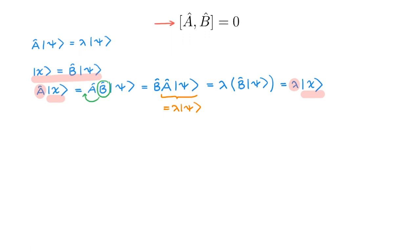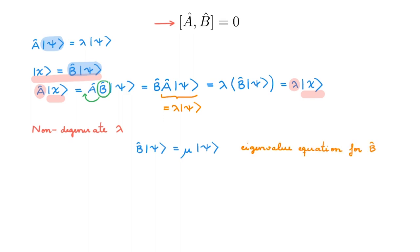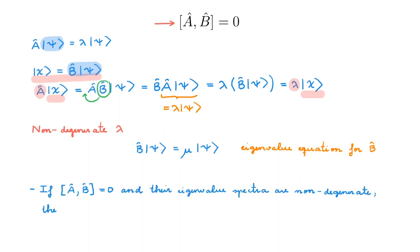So what does this imply? First, let's imagine that lambda is non-degenerate. This means that lambda has a single eigenstate associated with it, although this eigenstate is only defined up to a multiplicative constant. We have just found that both psi and B psi are eigenstates of A with the same eigenvalue. This means that B psi and psi must be the same eigenstate up to a constant, which I call mu. But this equation is just an eigenvalue equation for B, telling us that psi is also an eigenstate of B with eigenvalue mu. If A and B commute and their eigenvalue spectra are non-degenerate, then the eigenstates of A and B are the same. We have proved the statement for non-degenerate spectra.